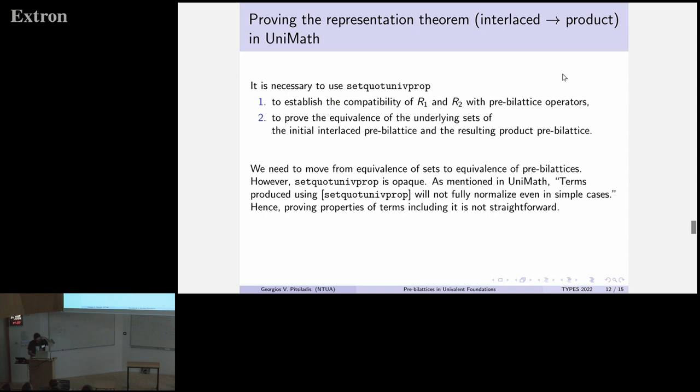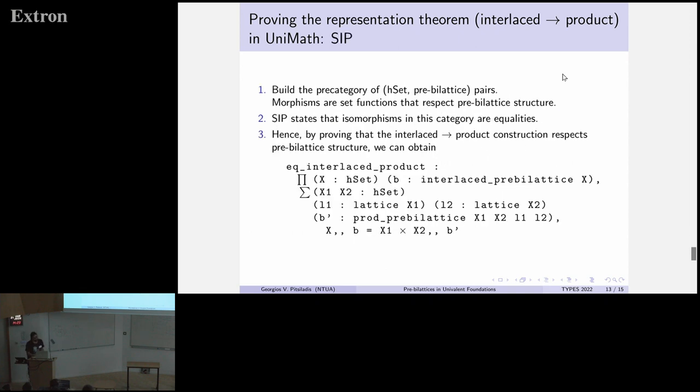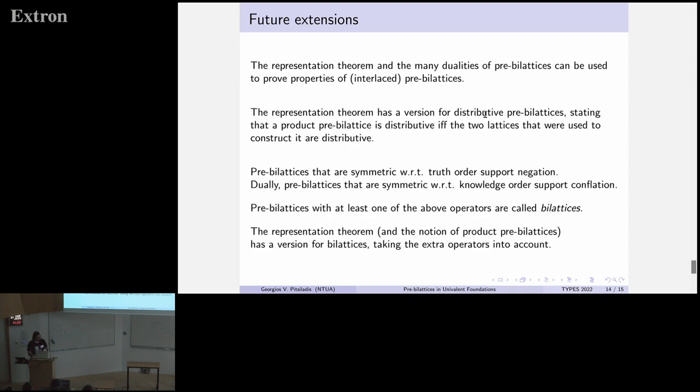Hopefully, an anonymous reviewer indicated how this can happen. It's the structure identity principle (SIP). What you do, you build the pre-category of the pairs of set and pre-bi-lattice. Morphisms are set functions with respect to pre-bi-lattice structure, the operators. So the SIP implies that the isomorphisms in this category are equalities. Using that, you can easily obtain this term that says what the theorem says.